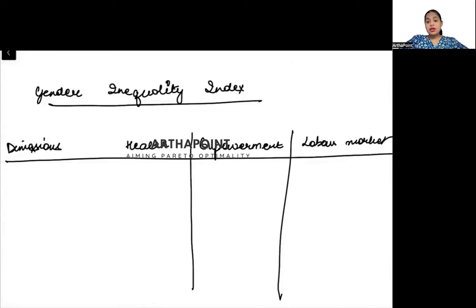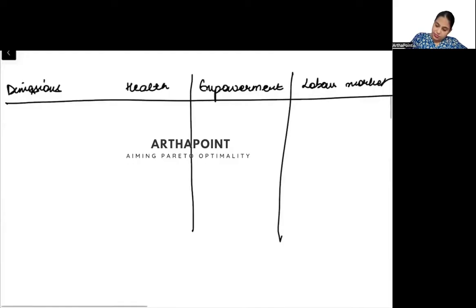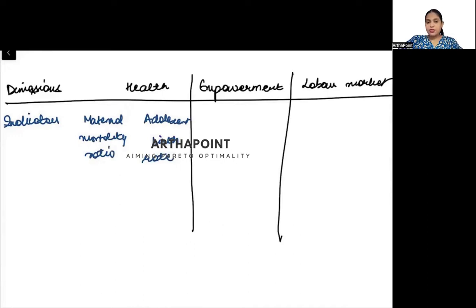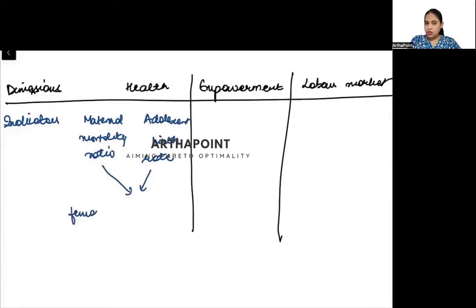Why is health taken? Because women's health can suffer due to reproductive health. For health, we take the maternal mortality ratio and the adolescent birth rate — how many women died while giving birth, and what is the adolescent birth rate. When these two are combined, they give you the female reproductive health index.